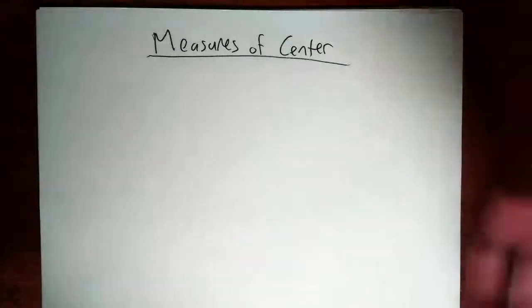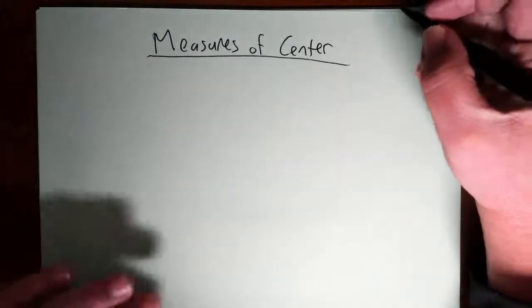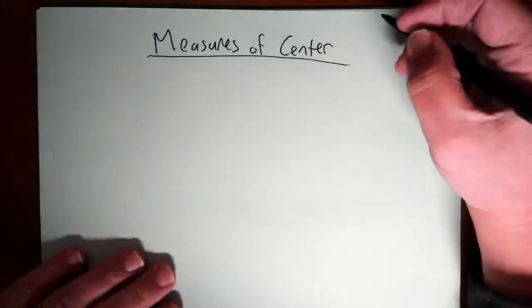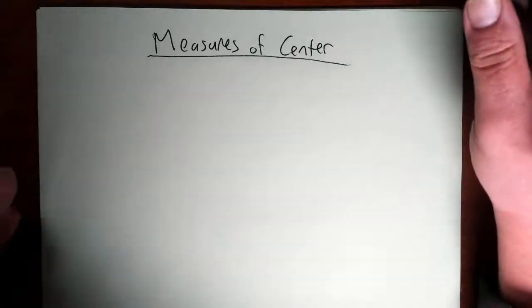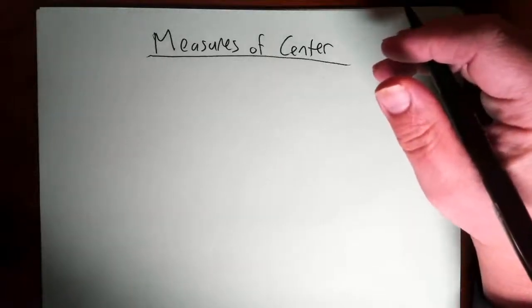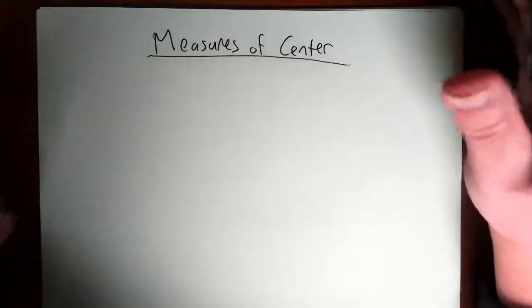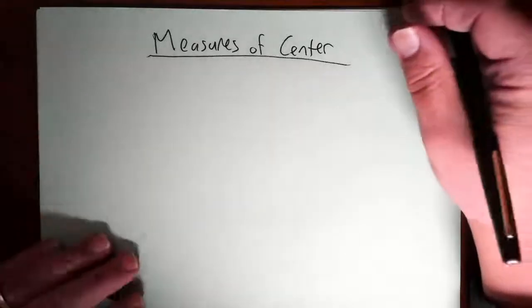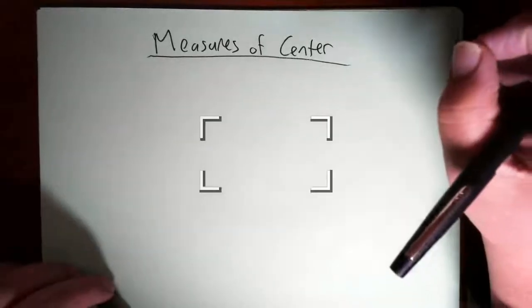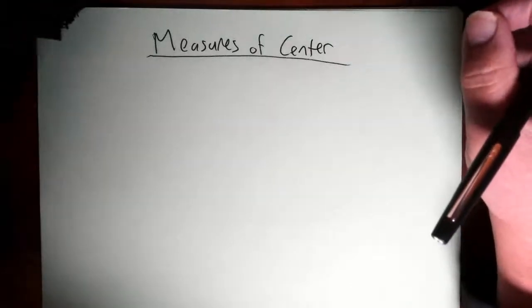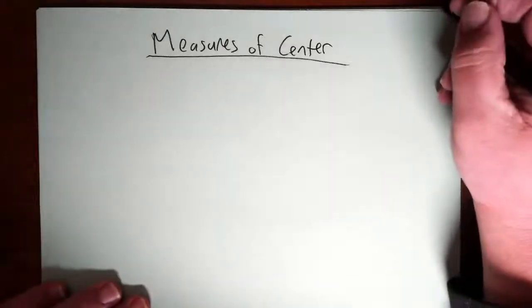We're going to keep talking about descriptive statistics. Descriptive statistics are ways of organizing, summarizing, and presenting data. In the last set of videos we talked about how you could organize a data set by making tables and graphs. Now we're going to learn how to calculate numbers that describe our data set in some way. These numbers are sometimes referred to as descriptive measures.